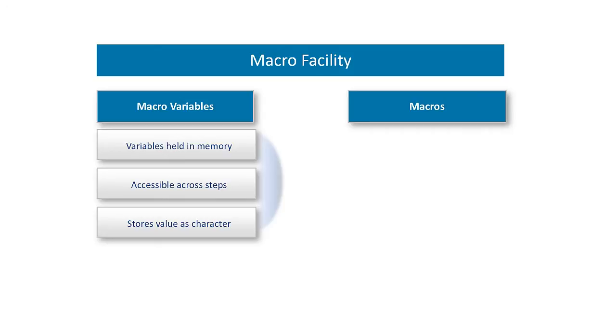Another difference is in the way Macro Variables store their values. Dataset Variables can be one of two types, numeric or character. In contrast, Macro Variables store data in character form.